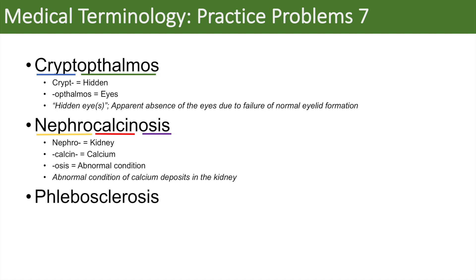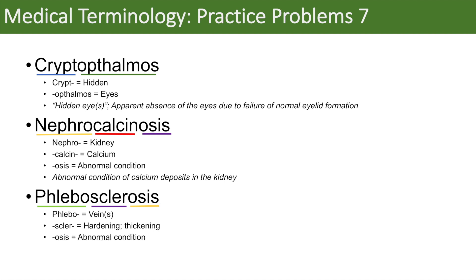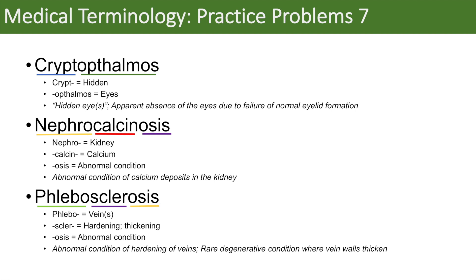The last word is phlebosclerosis. Phlebo — you might think of phlebotomy or phlebotomist — phlebo means vein or veins. Sclero, as in arteriosclerosis or atherosclerosis, means hardening or thickening. And osis means abnormal condition. So it simply means an abnormal condition of hardening or thickening of veins. In fact, phlebosclerosis is a rare degenerative condition that typically occurs in young males where the walls of certain veins thicken.